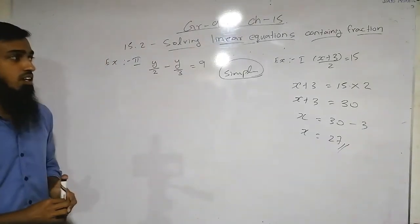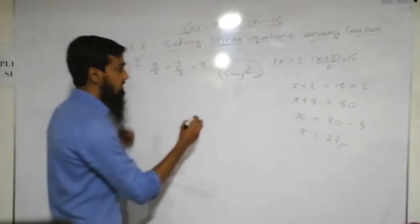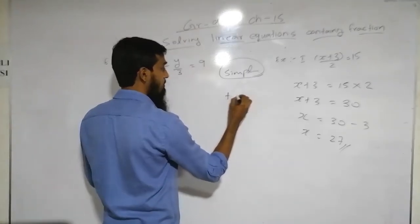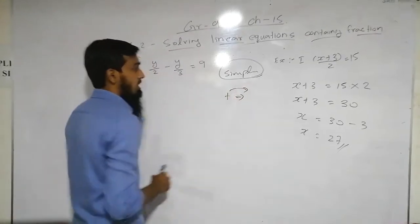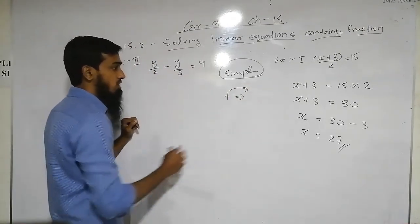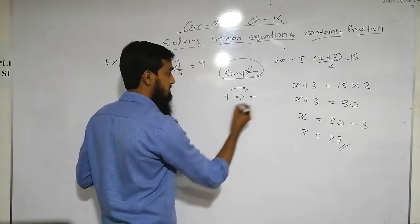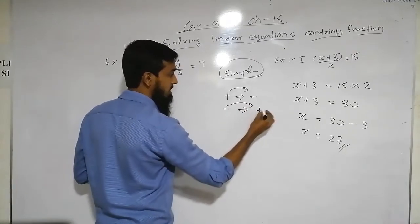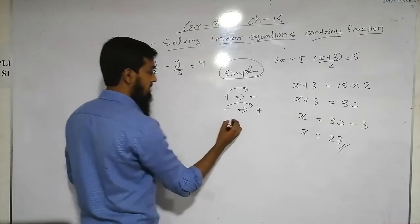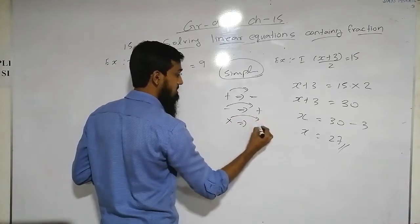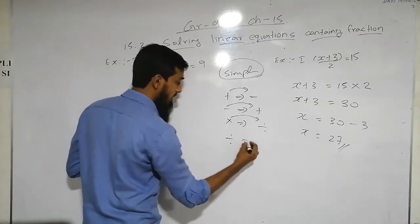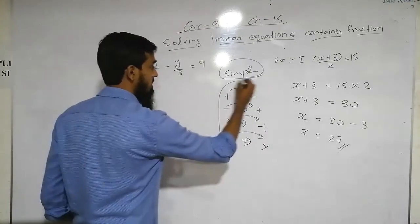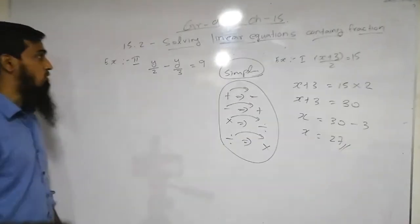We have to memorize these rules: if you move an addition term to the other side it becomes subtraction; subtraction becomes addition; multiplication becomes division; and division becomes multiplication. These are the main rules we need to know.